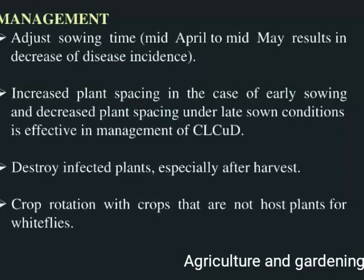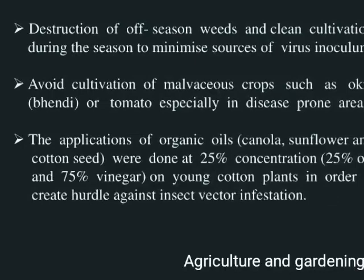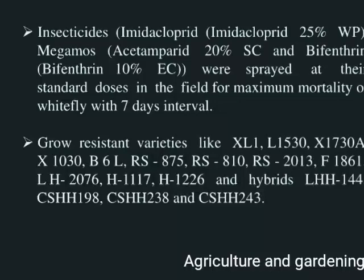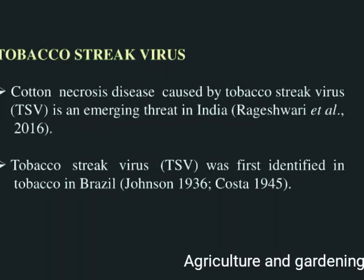For better management, adjust the sowing time — mid-April to mid-May — which results in a decrease of disease. Destroy infected plants, especially after harvesting. Crop rotation is also important. Avoid cultivation of related crops such as okra, brinjal, or tomato in disease-prone areas.